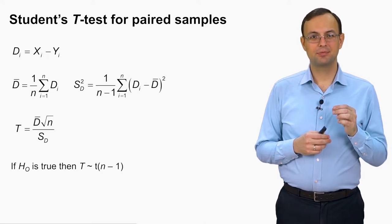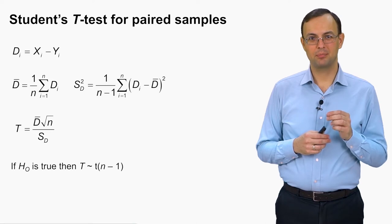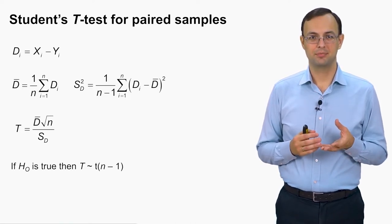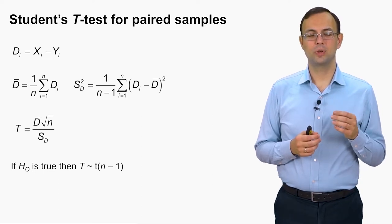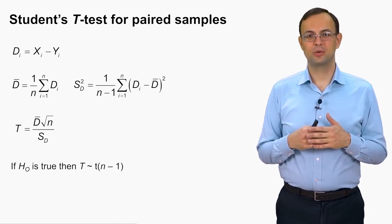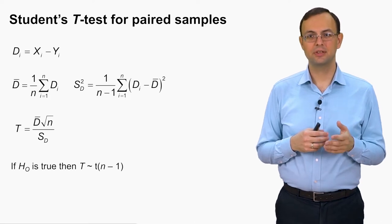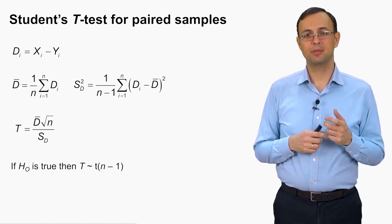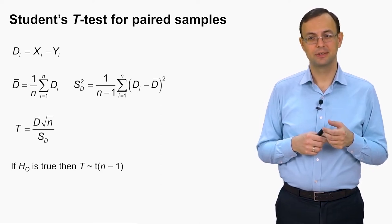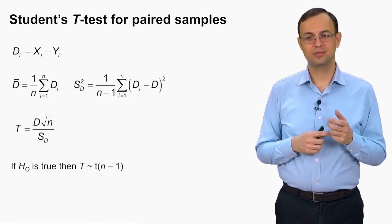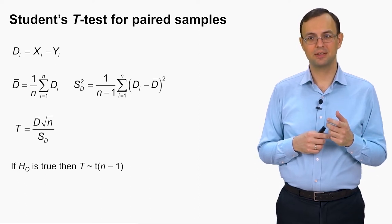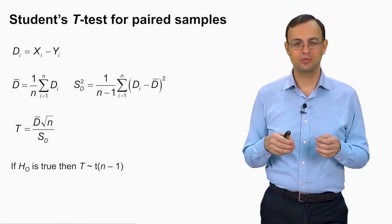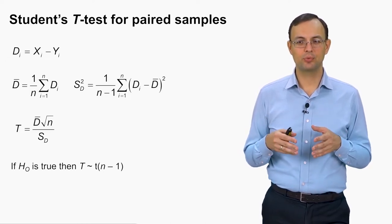The first step is to calculate differences between x's and y's: d_i = x_i minus y_i. Then we treat this sample of differences as a single sample. We calculate the mean difference d-bar, and the sample variance s_d squared. The test statistic is d-bar times the square root of n divided by s_d. It was proved that under the null hypothesis, the test statistic follows Student's distribution with n minus 1 degrees of freedom.